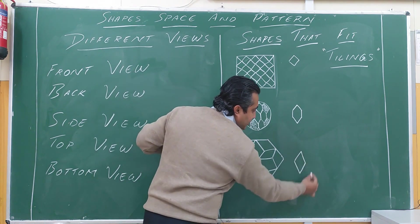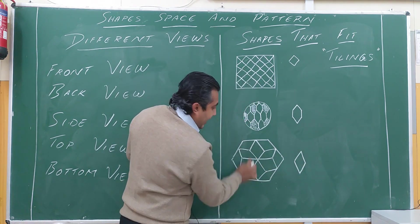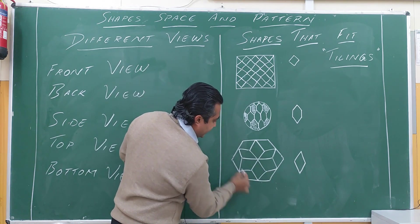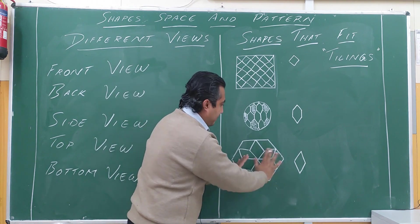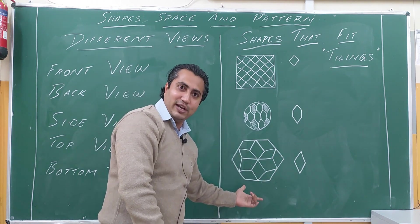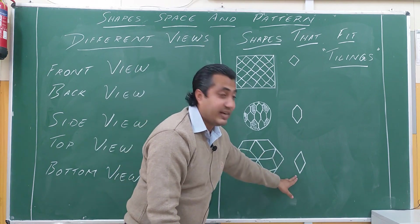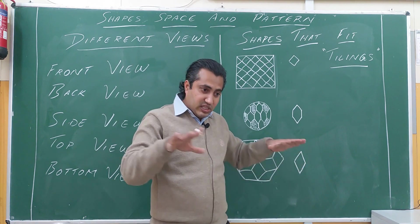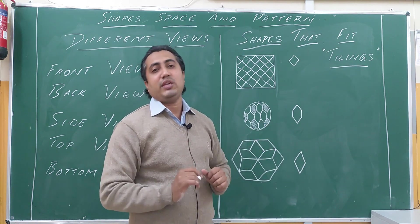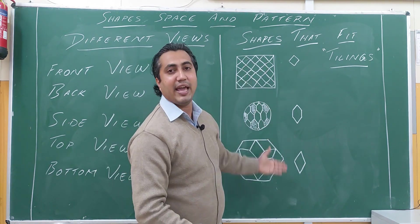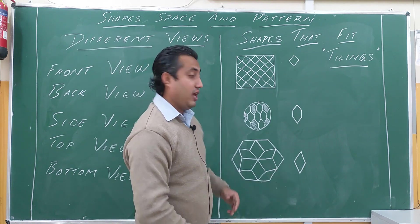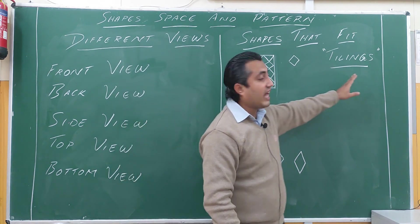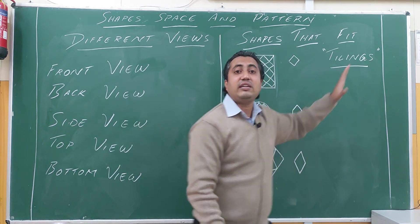Here there is a diamond shape. I am not that good with drawing, but you can see that there is a diamond shape everywhere. All the diamonds together can fit with each other — you can see that the diamond shape is also fitting with each other. There are other such shapes also. All these shapes which can fit to each other are called tilings.